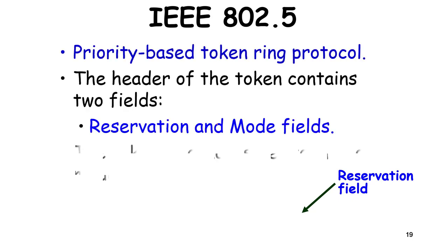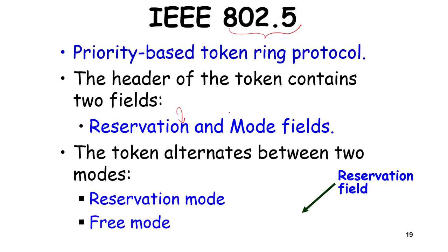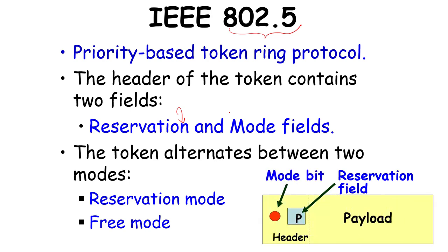Now let's discuss practical protocols. The first is IEEE 802.5, the priority-based token ring protocol. This is a logical ring — every node knows its left and right neighbors. The token header contains a reservation field and a mode field. The token alternates between the reservation mode and the free mode, with a mode bit and a reservation field. The rest of the payload is not important for channel access.